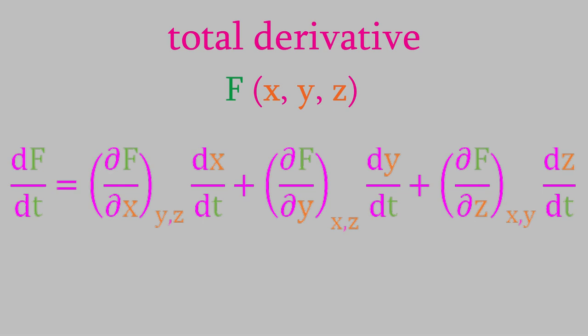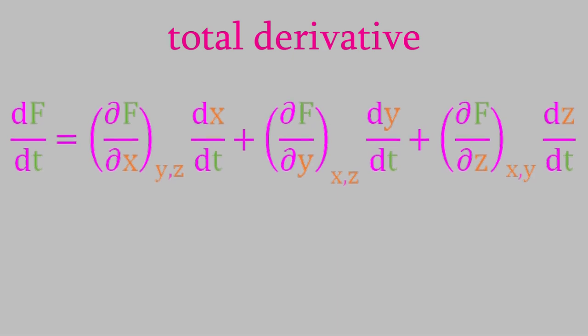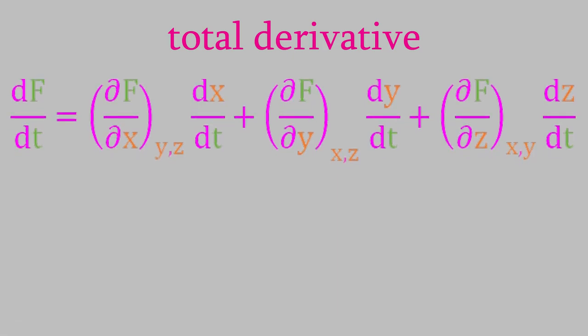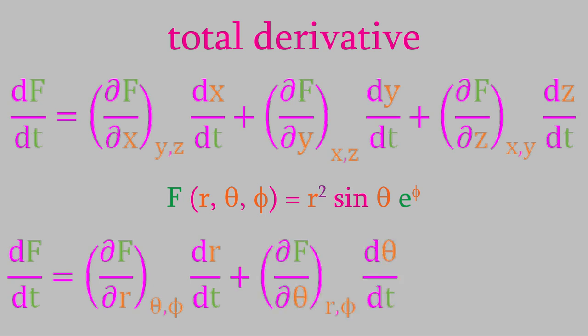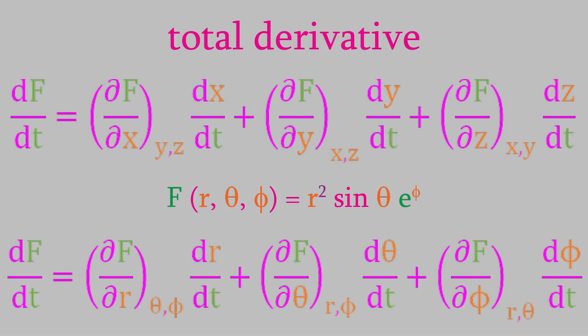Notice that each of the partial derivatives has variables that are being held constant, and these are written as subscripts. For example, suppose we have a function f which is equal to r squared times sin theta times e to the power phi. We want to determine the derivative of f with respect to another variable, t. To do that, we take the total derivative with respect to t: the partial of f with respect to r, times dr/dt, plus the partial of f with respect to theta, times d theta/dt, plus the partial with respect to phi, times d phi/dt.